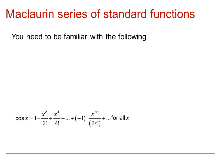And cos x is 1 minus x squared over 2 factorial plus x to the 4 over 4 factorial with a general term of minus 1 to the r times x to the 2r over 2r factorial, which is valid for all real values of x.